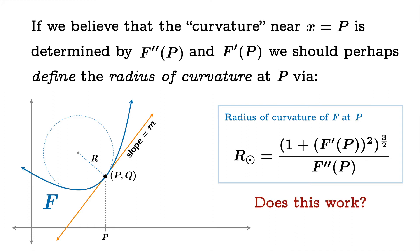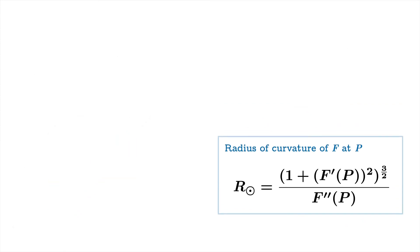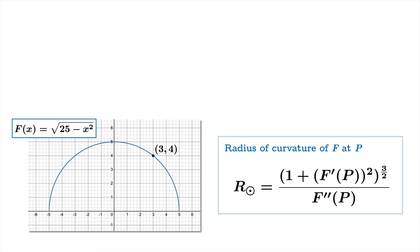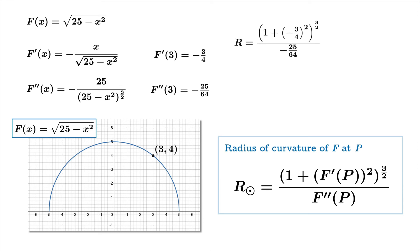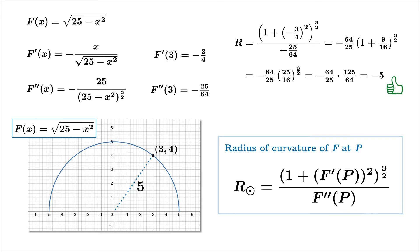We need to verify this works in a case we understand, so we'll check with a literal circle. Take f(x) = √(25 − x²) and the point (3, 4). Carefully working out: f′(x) = −x/√(25 − x²), f″(x) = −25/(25 − x²)^(3/2). At x = 3: f′(3) = −3/4, f″(3) = −25/64. Plugging into the radius of curvature formula and doing the algebra carefully, all the dust settles and we get −5, which is good news because the graph of f really is a circle of radius 5. Our formula agrees with the actual radius.